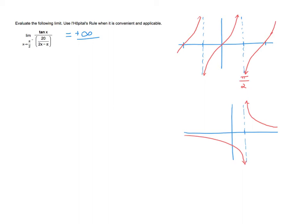Doing the same for the denominator — graphing that function separately — it also has a vertical asymptote at pi over 2, and the graph goes down toward negative infinity as we approach from the left. So the bottom is negative infinity. This is an indeterminate form: infinity over infinity.